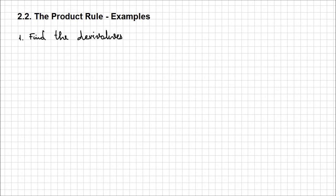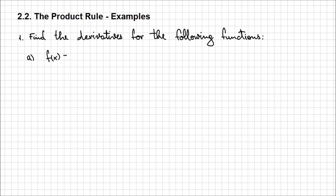Let's actually find the derivative for the following functions. The first one: f(x) = (2x - 7)(3x + 11). When you try to differentiate a function, look overall and see what you have. In this case, what I notice is that I have a product between these two expressions in the parentheses.